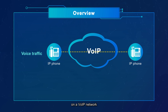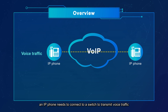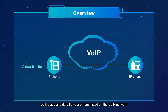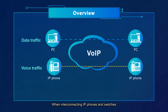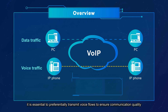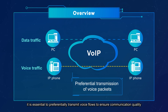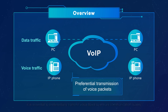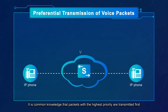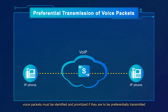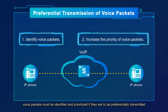Therefore, on a VoIP network, an IP phone needs to connect to a switch to transmit voice traffic. In this situation, both voice and data flows are transmitted on the VoIP network. When interconnecting IP phones and switches, it is essential to preferentially transmit voice flows to ensure communication quality. It is common knowledge that packets with the highest priority are transmitted first. Therefore, voice packets must be identified and prioritized if they are to be preferentially transmitted.